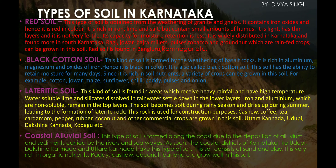Red soil in Karnataka is obtained from the weathering of granite and gneiss. It contains iron oxides, making it red in color. It is rich in iron, lime, and salt but contains small amounts of humus. It is light with thin layers and is not very fertile, with low moisture retention capacity. Rain-fed crops such as ragi, jowar, bajra, millet, pulses, tobacco, and groundnut can be grown in it. Red soil is found mainly in Bangalore, Ramanagara, and other parts of Karnataka.